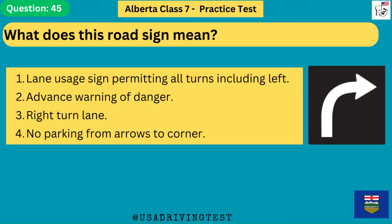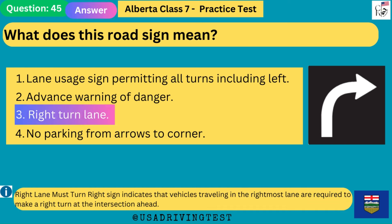What does this road sign mean? 1. Lane usage sign permitting all turns including left. 2. Advance warning of danger. 3. Right turn lane. 4. No parking from arrows to corner. The answer is 3: right turn lane. The right lane must turn right sign indicates that vehicles traveling in the rightmost lane are required to make a right turn at the intersection ahead.